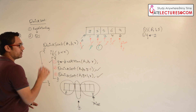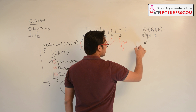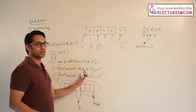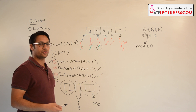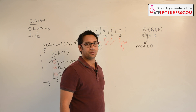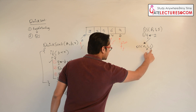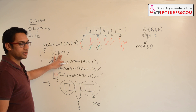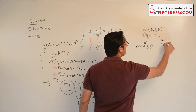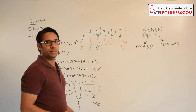We have executed line 1. Now we execute line 2: quick sort(a, 1, q minus 1) = quick sort(a, 1, 1), since q is 2. Because this is a recursive call it executes first — but here p is not less than r, so the condition fails and nothing happens. We return to the previous call and make the line 3 call: quick sort(a, q plus 1, r) = quick sort(a, 3, 5).